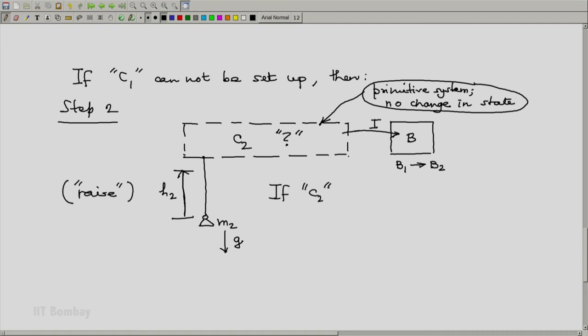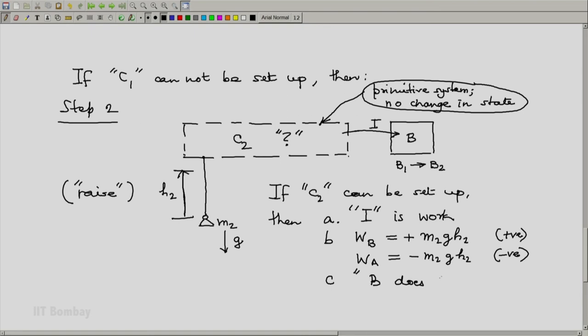And now we conclude that if C2 can be set up then, A, the interaction I is work. B, work done by system B is plus M2 G H2, which will be a positive number. And work done by system A is minus M2 G H2, which is a negative number. And we say finally system B does work on system A.